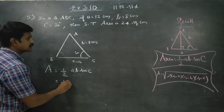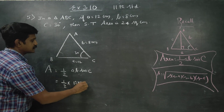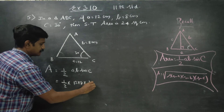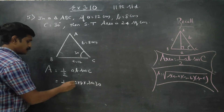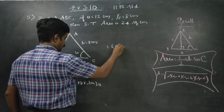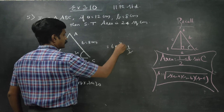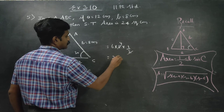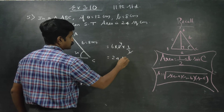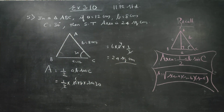So, half times A is 12, B is 8, times sin 30. That gives us 6 times 8. What is sin 30? It is 1 by 2. So 6 times 4 gives 24 square centimeters. You just have to recall the same formula. Thank you.